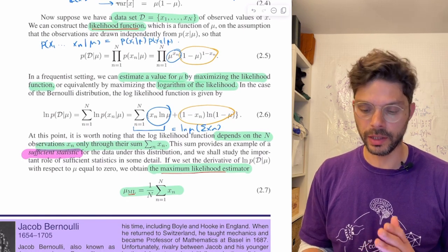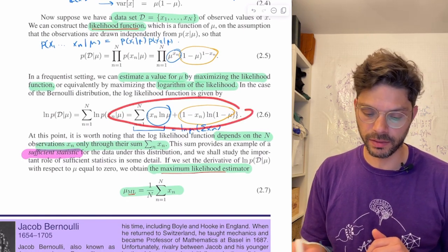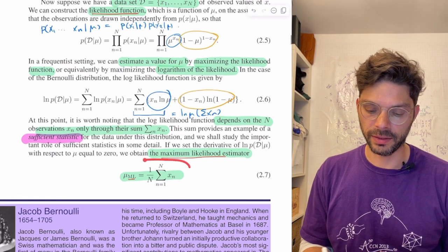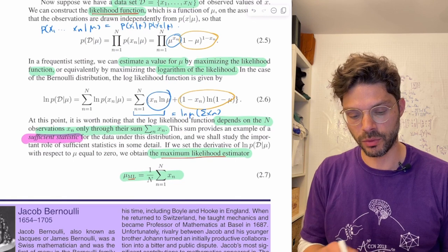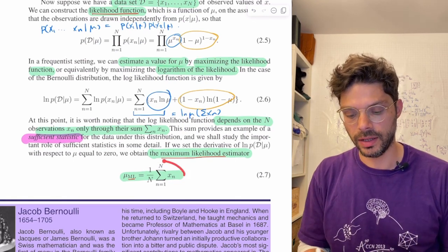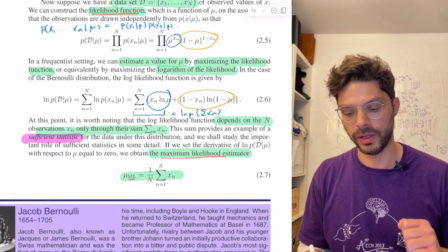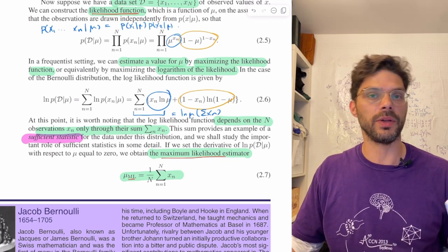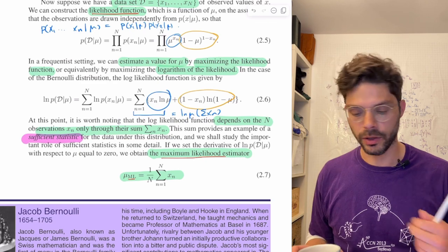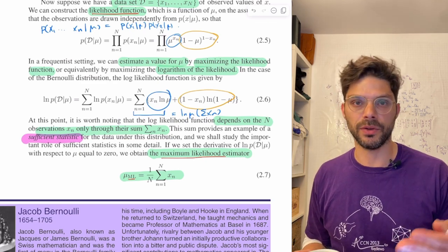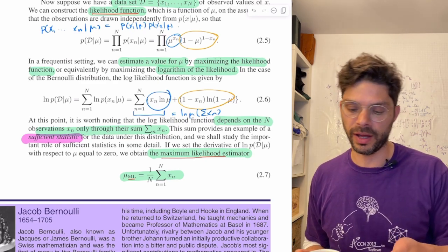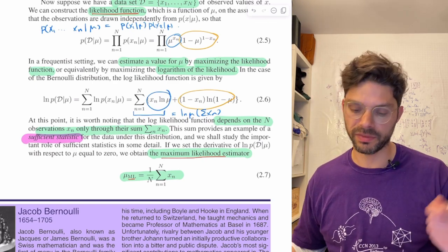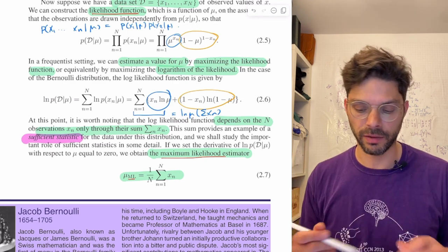If we set the derivative of the log likelihood to zero, we get that the maximum likelihood estimate of mu is intuitively the average of the tosses. In the case of a fair coin, about half will be heads, so you get n/2 heads divided by n, giving one half. And similarly for when it's not a fair coin.